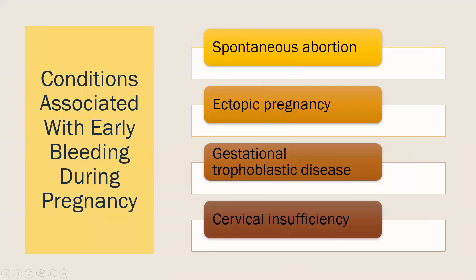Moving into bleeding disorders of early pregnancy, we'll discuss spontaneous abortion, ectopic pregnancy, trophoblastic disease, and cervical insufficiency. When I use the term abortion, this means a pregnancy that ends before the 20th week. In layman's terms, abortion often refers to a therapeutic abortion — one a woman chooses to have — but it includes any pregnancy that does not continue. I don't use the term abortion with patients to describe a miscarriage; we use the word miscarriage when talking to our patients.